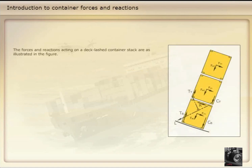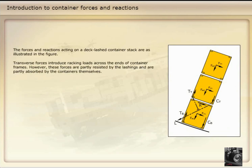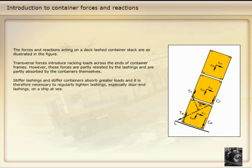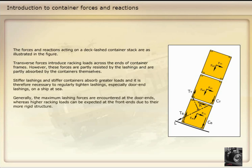The forces and reactions acting on a deck-lashed container stack are as illustrated in the figure. Transverse forces introduce racking loads across the ends of container frames. However, these forces are partly resisted by the lashings and are partly absorbed by the containers themselves. Stiffer lashings and stiffer containers absorb greater loads, and it is therefore necessary to regularly tighten lashings, especially door-end lashings, on a ship at sea. Generally, the maximum lashing forces are encountered at the door ends, whereas higher racking loads can be expected at the front ends due to their more rigid structure.